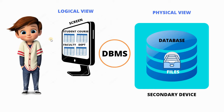Jo user dikhta hai ki database mein table hai, woh logical view hai. Lekin actual mein database ke andar koi table nahi, balki files hain, aur user ka data DBMS files mein store hota hai. So the logical data model is what we see as tables — table ke format mein data dikhta hai. So yahan table ko 'relation' kehte hain — yeh important baat hai. Relational database model mein 'relation' means table.